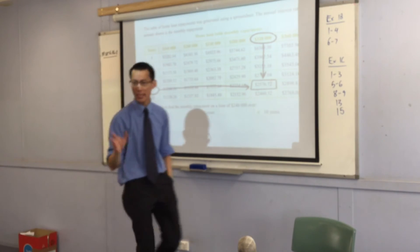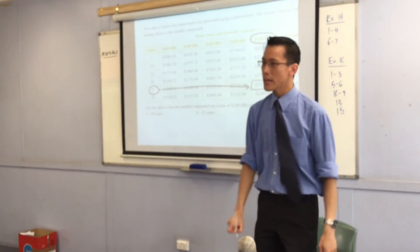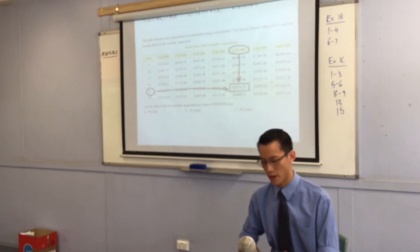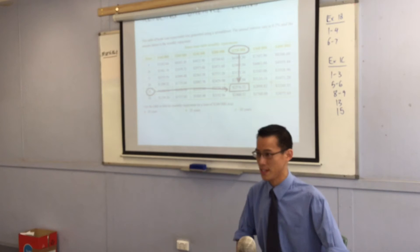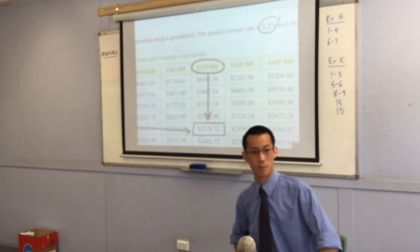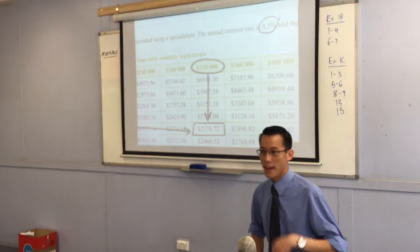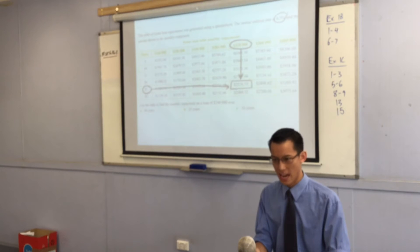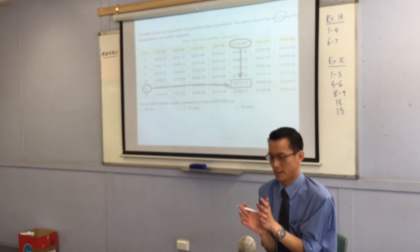Now think about this with me. Get your calculator out. $320,000. This particular table has been constructed at a particular interest rate. Can you see it? Very good. 8.5% if you can screw your eyes up and look down there.